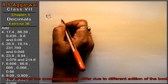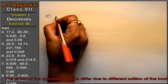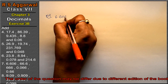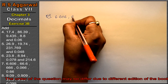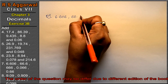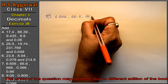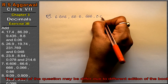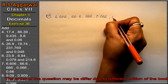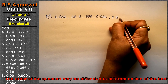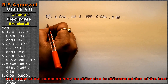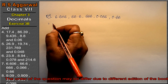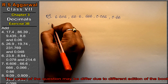Let's do question number 7 of exercise 3B. That is decimals. Question number 7: add 6.606 and 6.606 and 6.606 and 6.606 and 0.66. There are 3 digits after the decimal. So,